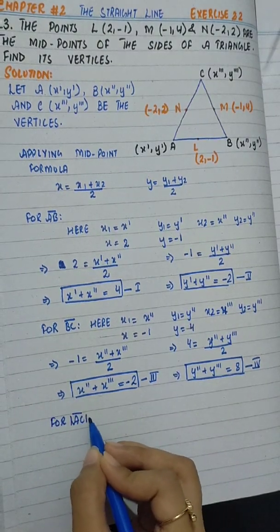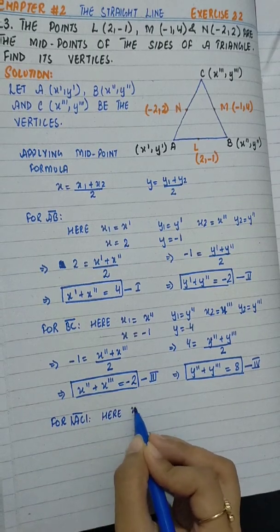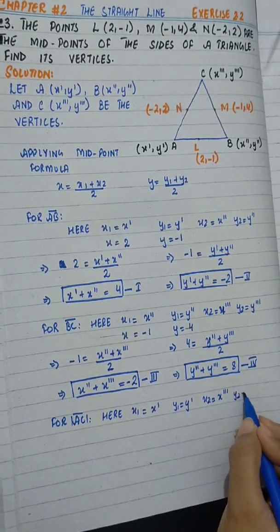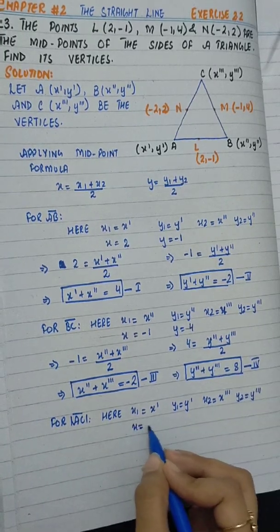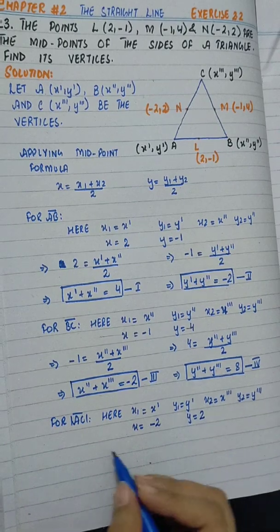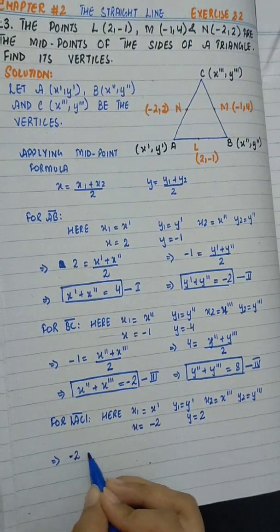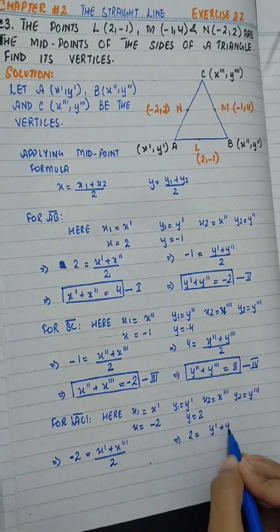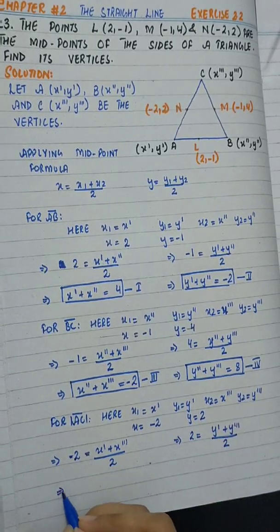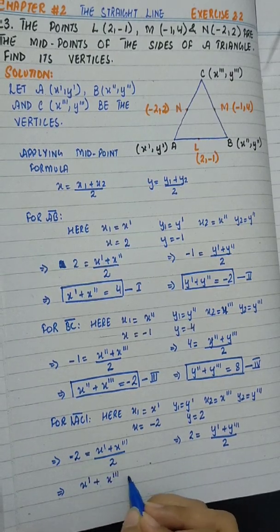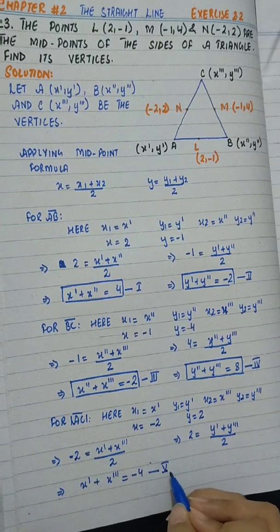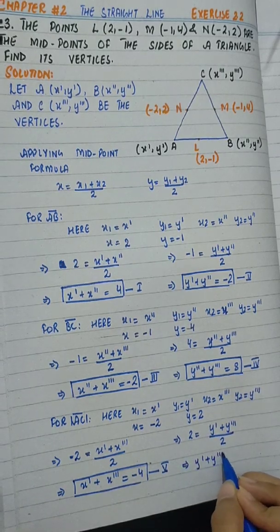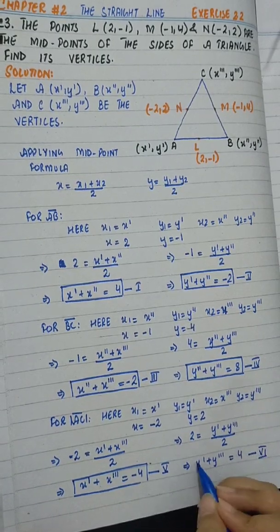For side AC, x1 is x', y1 is y', x2 is x''', y2 is y''', and the midpoint is x equals minus 2, y equals 2. So: minus 2 equals (x' + x''') divided by 2, and 2 equals (y' + y''') divided by 2. This gives x' + x''' = minus 4 as equation 5, and y' + y''' = 4 as equation 6.